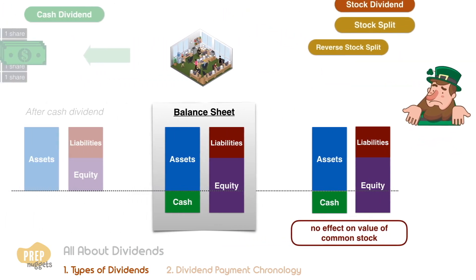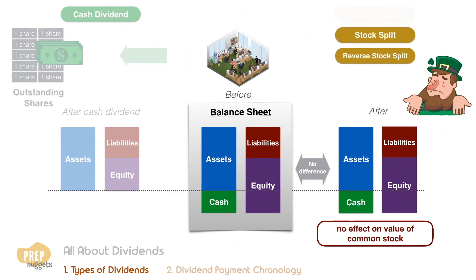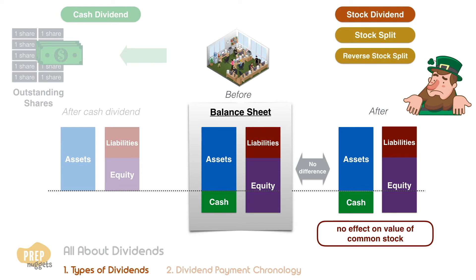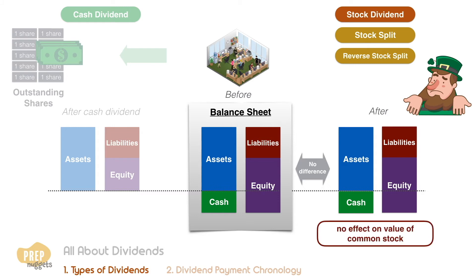So we've seen that a stock dividend, stock split, and reverse stock splits are corporate actions that do not change the shareholders' wealth or the company's balance sheet, so they have no effect on the value of the common stock. Stock dividends do not affect the valuation of a company's common stock as a whole. In a way, a stock split can be seen as an alternative to a stock dividend — for example, a two-for-one split is equivalent to paying a 100% stock dividend.